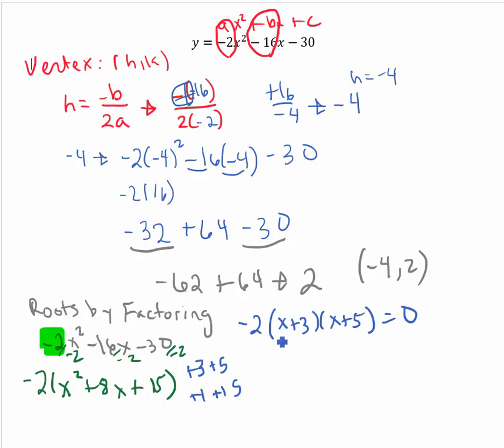So that becomes negative 2 times x plus 3 times x plus 5. And we set that equal to 0. So we have x plus 3 equals 0 and x plus 5 equals 0.